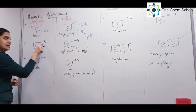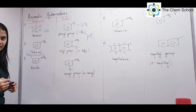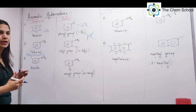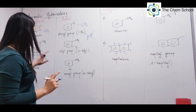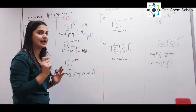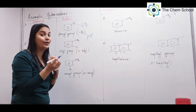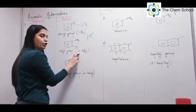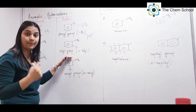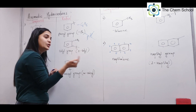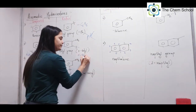If benzene has a CH3 on it, it is called methyl benzene, and methyl benzene has a special name: toluene. Wherever you see methyl benzene, we call it toluene. Now if I remove one hydrogen from the aromatic ring of toluene — CH3 is position 1 by default, and the removed H position is 2 — with respect to 1, position 2 is ortho. So toluene becomes the tolyl group. Specifically, this is ortho-tolyl or 2-tolyl.